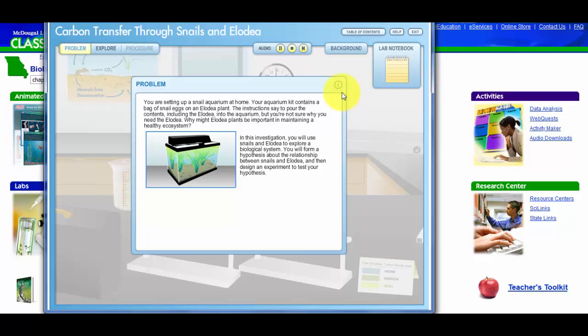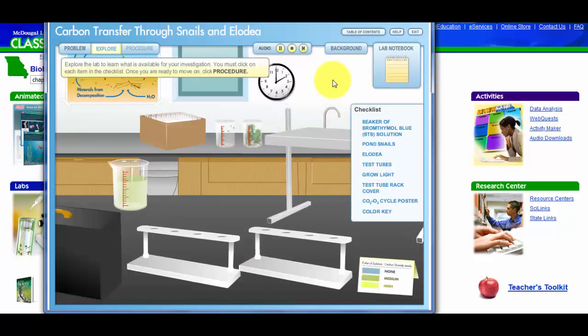You are setting up a snail aquarium. Explore the lab to learn what is available for your investigation. You must click on each item in the checklist. Once you are ready to move on, click procedure. So see where it lights up? Go ahead and look around. There'll be a check on this list after you click on all the little parts of the lab.